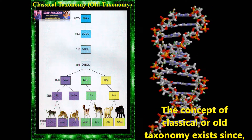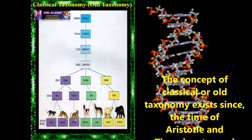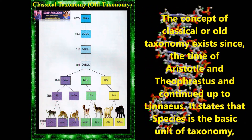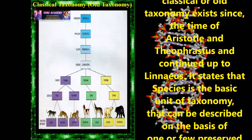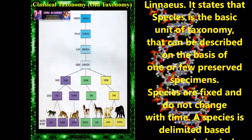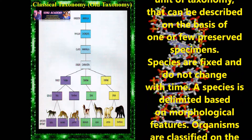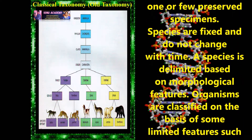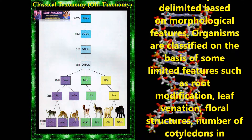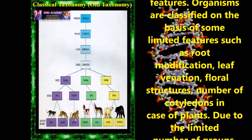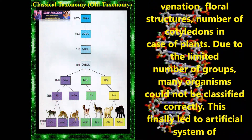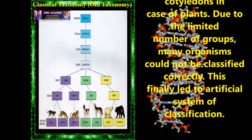Children, now let us discuss the classical taxonomy, which can also be called as old taxonomy. The concept of classical or old taxonomy exists since the time of Aristotle and Theophrastus and continued up to Linnaeus. It states that species is the basic unit of taxonomy, described on the basis of one or few preserved specimens, and species are fixed and do not change with time. A species is delimited based on morphological features.